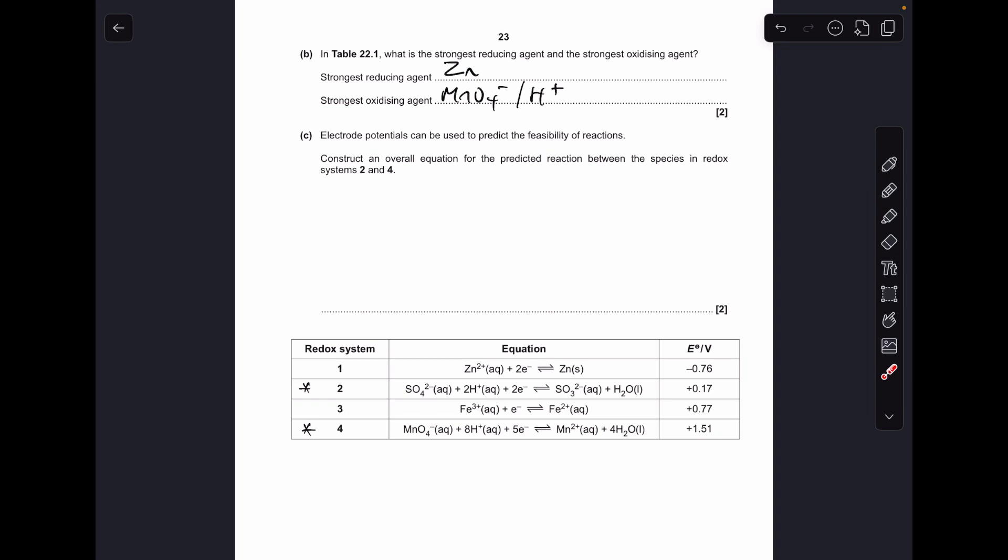And moving on to the last part. So we've got to come up with the overall equation for the predicted reaction between systems 2 and 4. So we need to look at the relative sizes of the electrical potentials. You can see number 4 is the most positive. So what that means is its equation will run forwards, and therefore the other one has to go backwards.